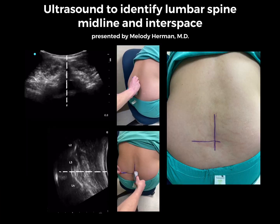After this ultrasound scan for neuraxial anesthetic placement, your patient now has two intersecting lines on their back, guiding you to the exact midline and interspace for your block.